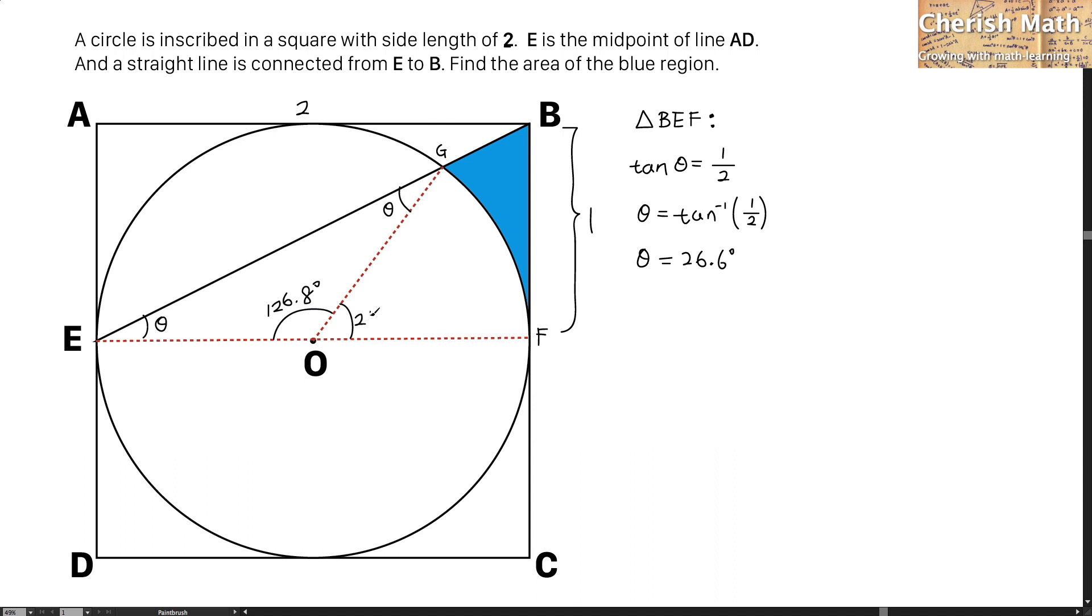For this angle, that will be 2 theta, same as 53.2 degrees. This is the sum of the opposite angle theta and theta. That is how I got 2 theta.